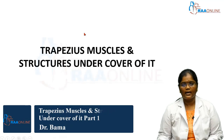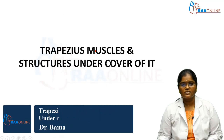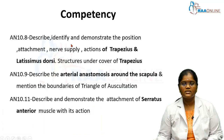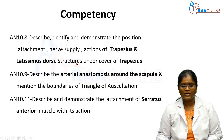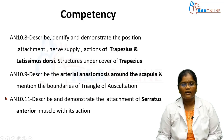Good afternoon, welcome to RAW Online. Today's class is about the trapezius muscle and structures under cover of it. The competencies related to this topic are AN 10.8, which describes identifying and demonstrating the position, attachment, nerve supply, and actions of trapezius muscle and latissimus dorsi. Students should also know the structures under cover of trapezius muscle (AN 10.9), the arterial anastomosis around the scapula, boundaries of the triangle of auscultation (AN 10.11), and the attachment and action of serratus anterior muscle.